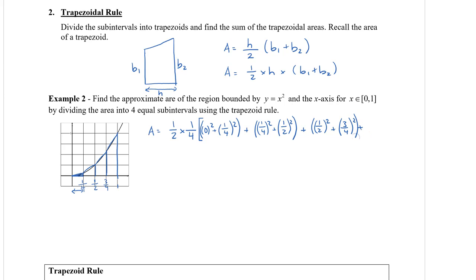Finally, our last trapezoid — the tallest one — has a left side of three-quarters squared, plus 1 squared for the right side of the trapezoid.